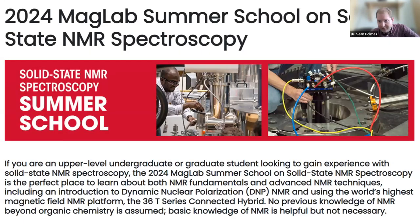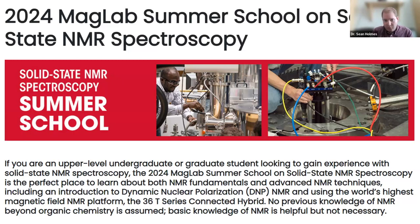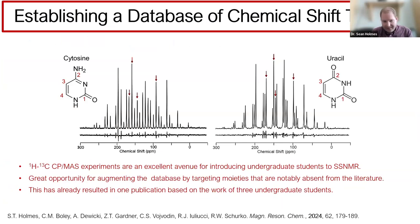Starting in 2023, MagLab began hosting an NMR spectroscopy school for undergraduate students. We hosted three students who attended lectures, participated in tours and round-table panels, and—significantly—participated in a week of research with us. Running standard carbon CPMAS experiments is an excellent avenue for introducing undergraduates to research, and a great opportunity to augment the existing database by targeting moieties identified as absent. Based on last year's research, this has already resulted in a publication, with slow CPMAS spectra for cytosine and uracil acquired by undergraduates.